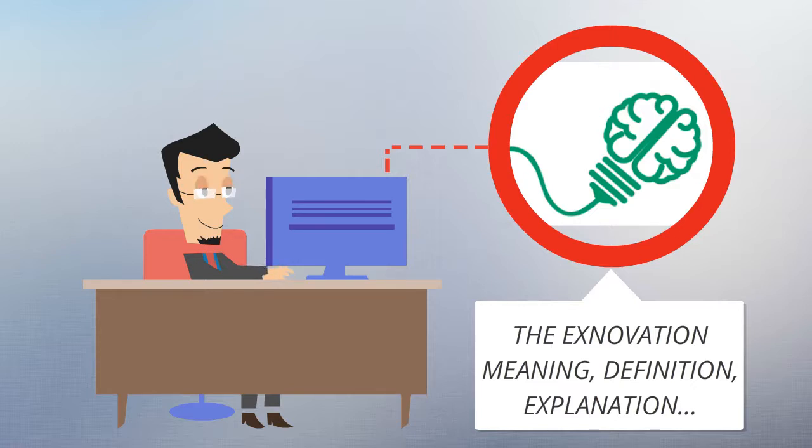Can occur when products and processes that have been tested and confirmed to be best in class are standardized to ensure that they are not innovated further. Companies that have followed exnovation as a strategy to improve organizational performance include General Electric, Ford Motor Company, and American Airlines.